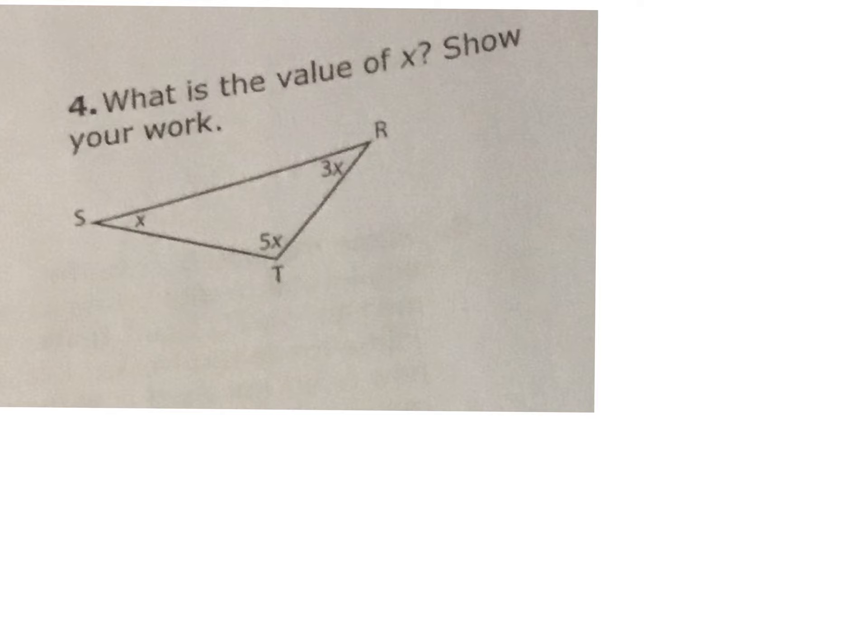For this question we're trying to figure out the value of X. So we're not actually told what each angle is equal to. We're told that angle R is equal to 3 times X, angle T is equal to 5 times X, and angle S is equal to X. So we have to figure out what X is. If I know what X represents, then I can figure out each angle. We don't know any of these angles, but what do you know about the sum of the interior angles in a triangle? What does every single angle inside a triangle have to add up to? 180.